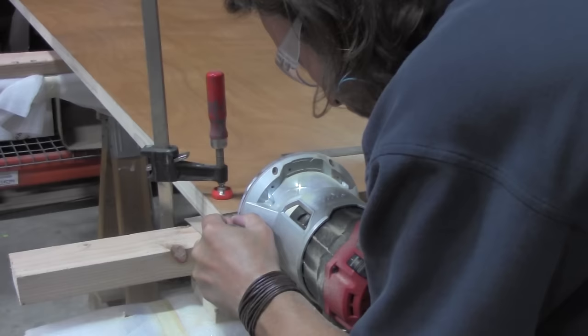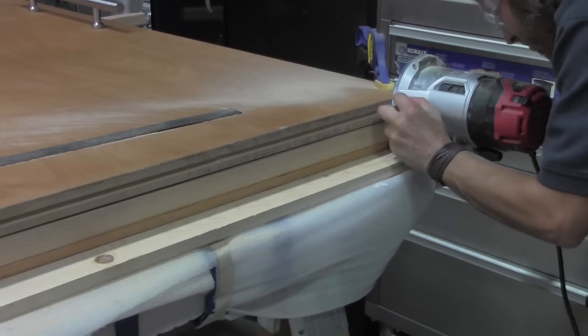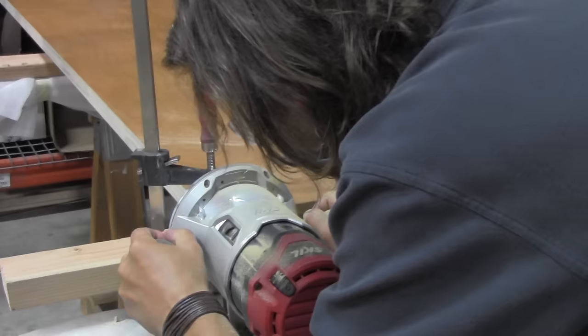Use a router to make a channel that is 9/32nds of an inch wide and 25/32nds of an inch deep, so the door can pass freely over the posts. And after we clear the channel of any loose particles, we'll go ahead and make a second cut to clean up any rough edges.